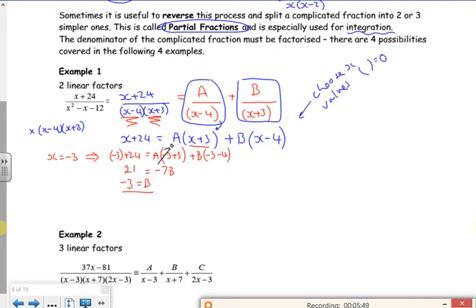Now then, let's have a look next one. So to make that bracket equal to 0, I choose x equals 4. So if I do 4 plus 24 is A lots of 4 plus 3 plus B lots of 4 minus 4. I've got 28 is equal to 7A. That one disappears. So I'm just left with 4 for A. I've found both my missing numbers.